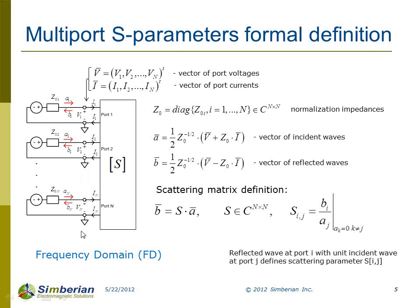Scattering parameters of a multi-port are defined with normalization and termination impedance, so it's not a completely black-box definition — it requires some normalization or termination. Once we know such normalization or termination, we can define incident wave or reflected wave. Currents and voltages can be united in vectors, and if those are n-port structures, we have an n-by-n complex matrix.